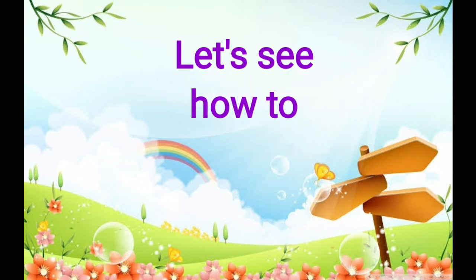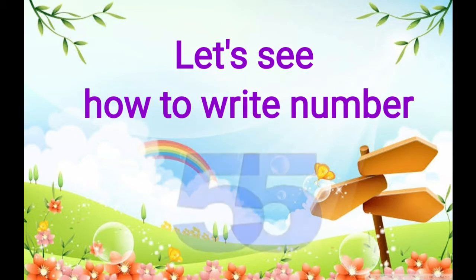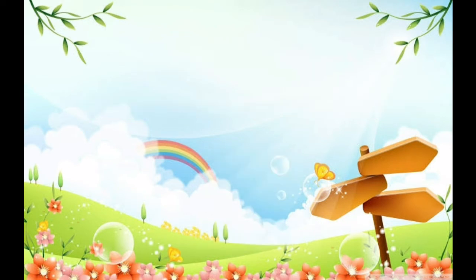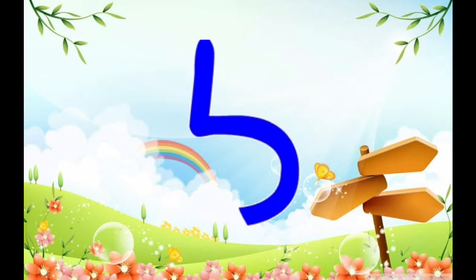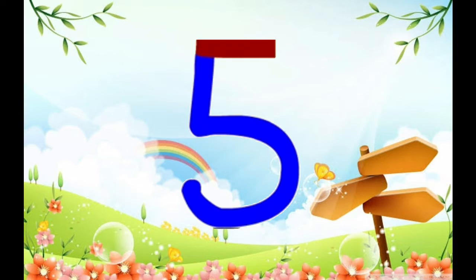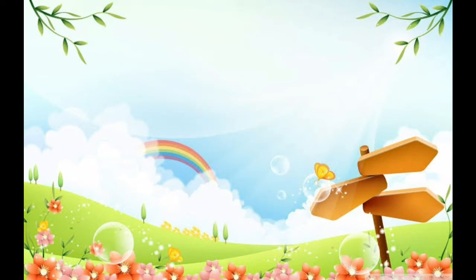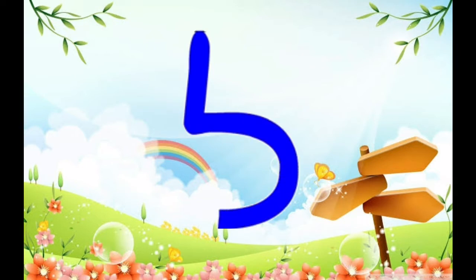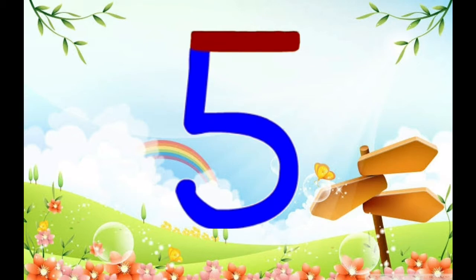Let's see how to write number 5. Make a standing line, make a curve and a sleeping line. Once again — make a standing line like this, make a curve, and make a sleeping line at the top. This is number 5.